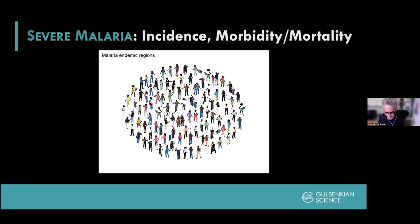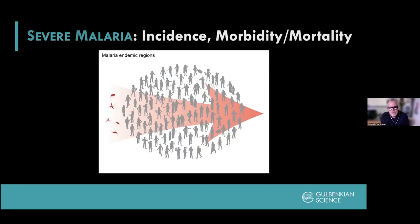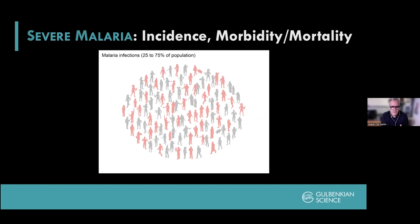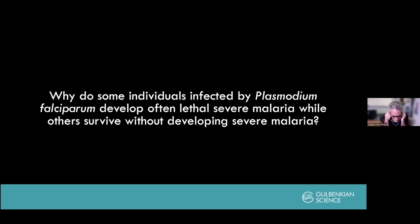We can study this with any pathogen, but malaria gives us a very good example. In a hypothetical African population exposed to mosquitoes in an endemic area, about 25 to 75% of the population will be infected. A fraction will develop severe malaria and some will die. In endemic areas of malaria, why do some people develop severe malaria and die, while others are infected with the same pathogen burden but do not develop severe disease and do not succumb?